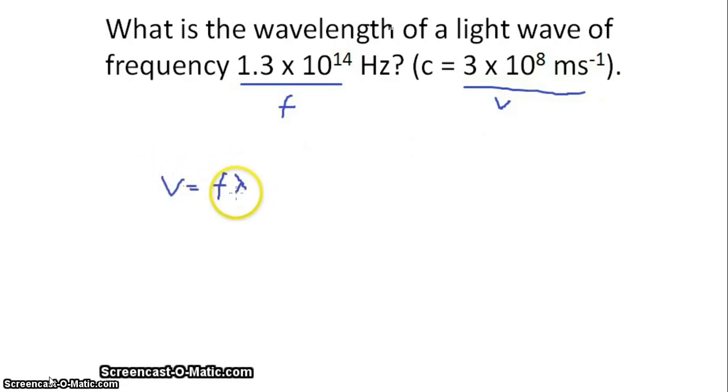If we take our wave equation V equals F lambda and we're being asked to find out what the wavelength is, all we need to do is rearrange the equation so lambda is V over F and plug our numbers from above into that equation. So V is 3 times 10 to the 8, frequency is 1.3 times 10 to the 14 hertz. Plop that into our calculator and we end up coming up with an answer of 2.3 times 10 to the minus 6 metres.